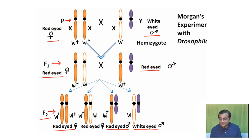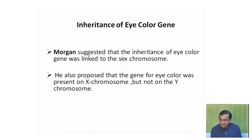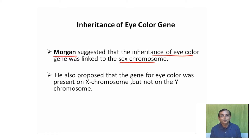From this cross, Morgan concluded that the eye color gene was linked to the sex chromosome. He proposed that the gene for eye color was present on the X chromosome but not on the Y chromosome.